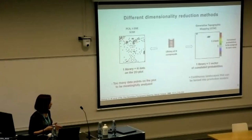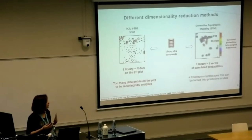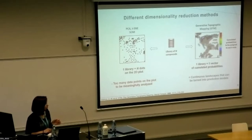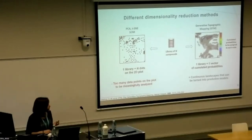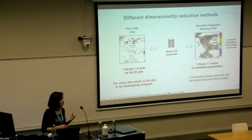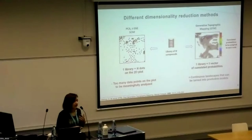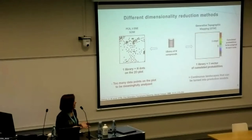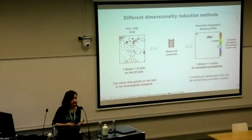GTM also has advantages when analyzing very large libraries. With PCA or t-SNE you have to deal with N objects — N dots in the library. But GTM allows you to accumulate responsibilities of all compounds being assigned to different nodes on the map, representing a library as one single vector. You can then compare libraries, which simplifies analysis significantly.